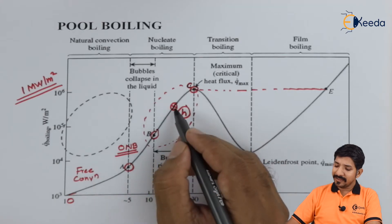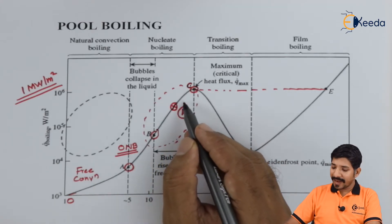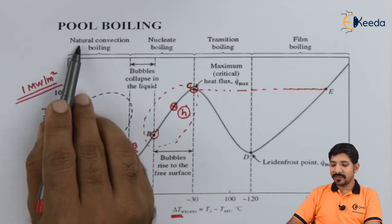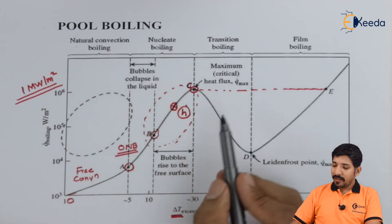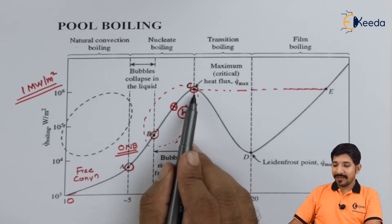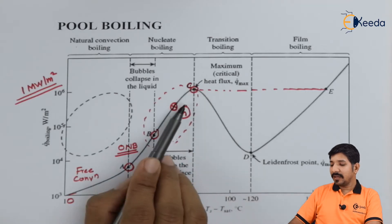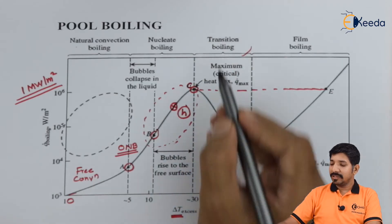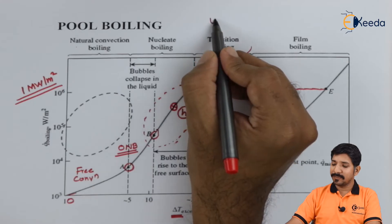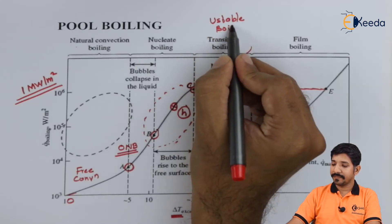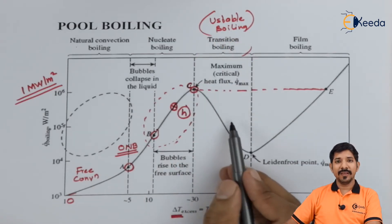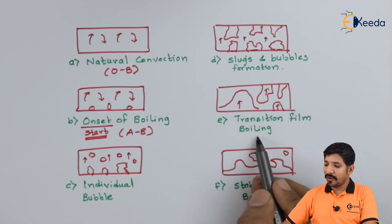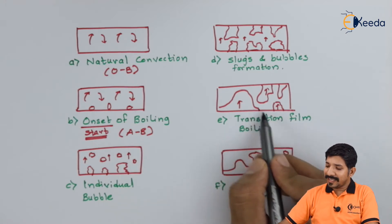We try to avoid this region and make sure that the critical heat flux does not occur. What we want is the heat transfer rate to be maximum, and that is why we need to stay in the nucleate boiling prime region. If CHF does not occur, the next region that forms is transition boiling. The other name for transition boiling is unstable boiling — basically there is no stable film formed.